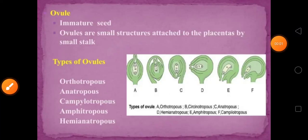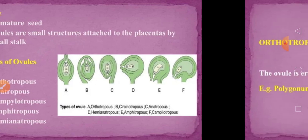Ovule is an immature seed. It's a small structure attached to the placenta by a small stalk. In this class we are going to learn the different types of ovule.